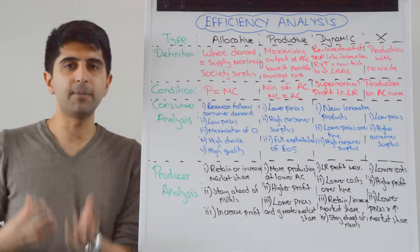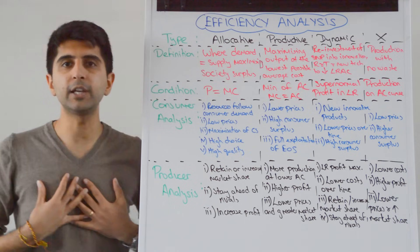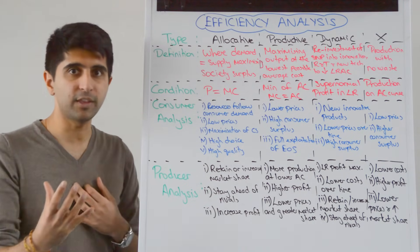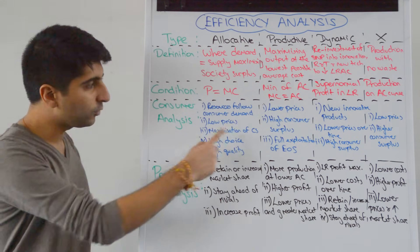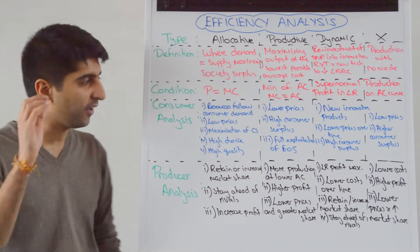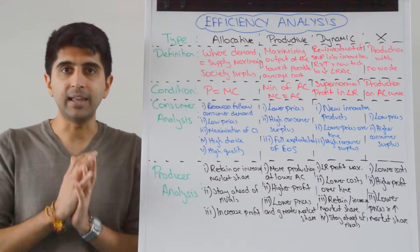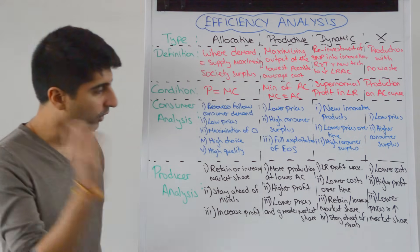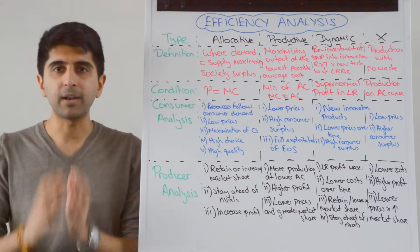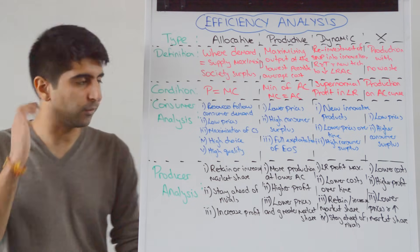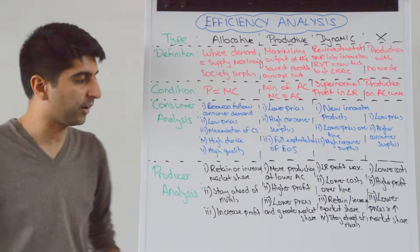What does it mean for the consumer if a business is being allocatively efficient? It means that resources are following consumer demand. Consumers are getting exactly what they want, and exactly the quantity that they want. Consumers are getting low prices, which means maximization of consumer surplus. Consumers are getting high choice, so the quantity in the market is high, exactly what consumers desire. High choice and high quality of production as well. Competitive outcomes implies that quality has to be high for firms to stay ahead of their rivals. These are all great things for the consumer, which you can really analyze in a nice paragraph.